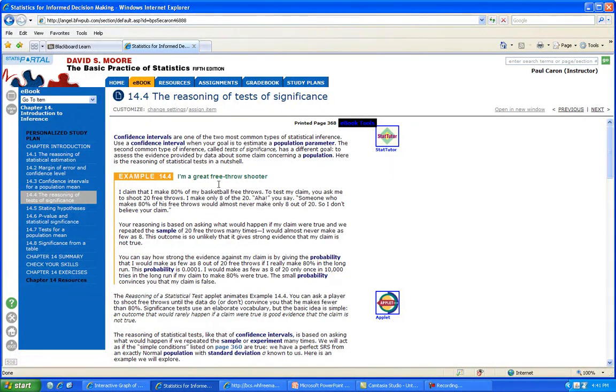Your confidence intervals are one of the two most common types of statistical inference. This is in your book on page 368. Use a confidence interval when your goal is to estimate a population parameter. These are called tests of significance.